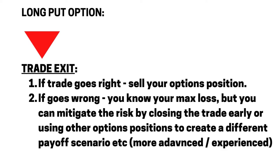Getting out of the trade: if it goes right, you can sell your options position at any time — you don't have to leave it to expiry. Just get out, close it, and move on to the next trade. You need to judge where the underlying price downside is, but once the delta of the trade gets to one there's not much value left, so you might as well get out. If it goes wrong, you know your maximum loss — it's the cost of the trade — but you can mitigate that risk by getting out the options trade early, or as you get more advanced, create different options scenarios by adding different calls, puts, expiries, and time horizons to give you a different payoff profile.